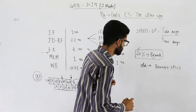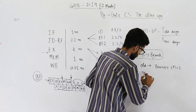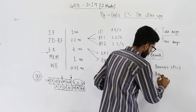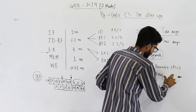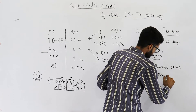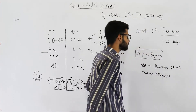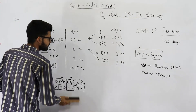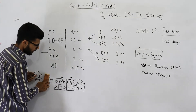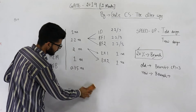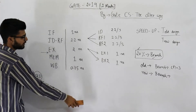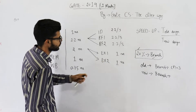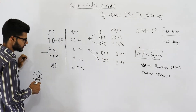In the new design, for branch instructions, let's calculate the average CPI. In the new design we have eight stages, and the target address is known after completion of the EX2 stage. Let me first draw the diagram.